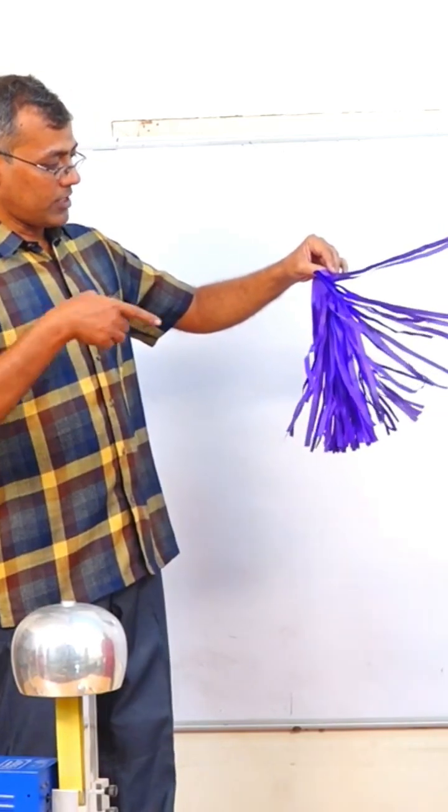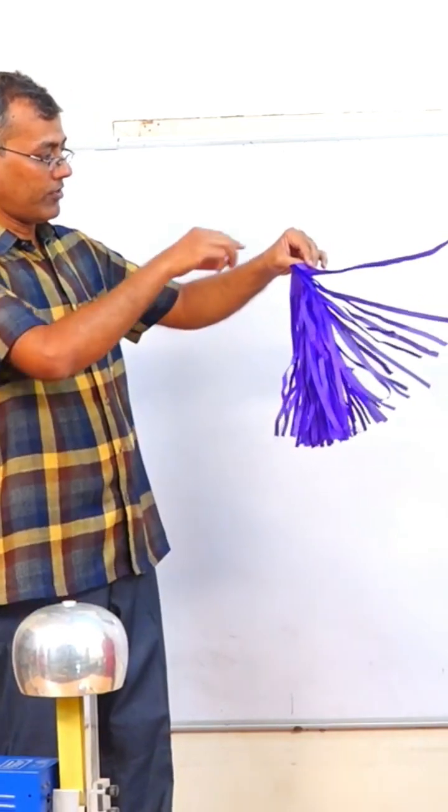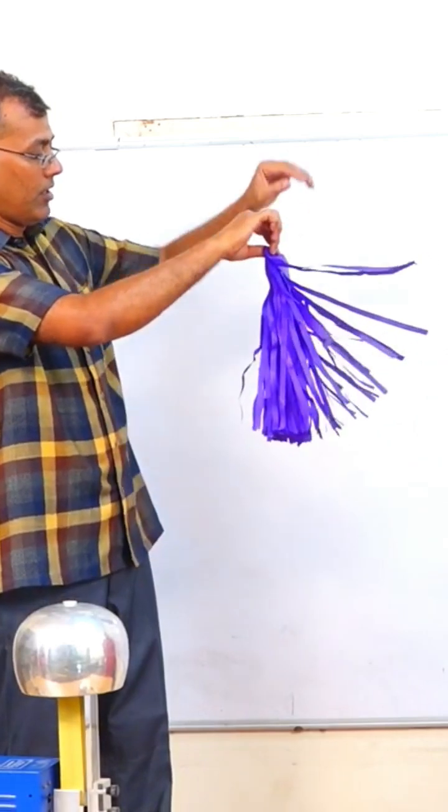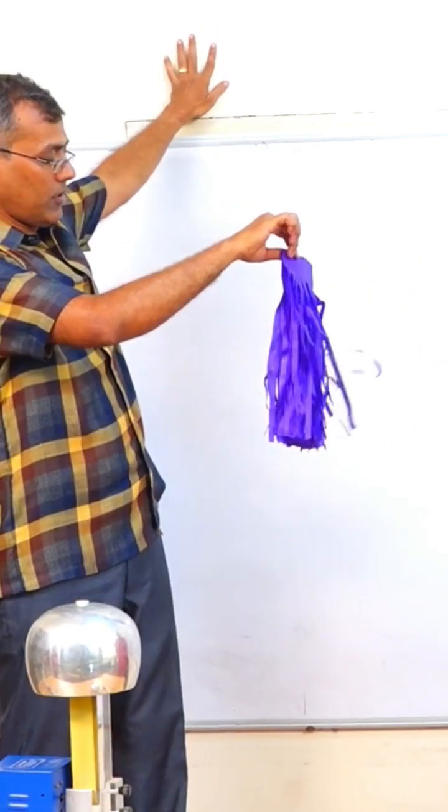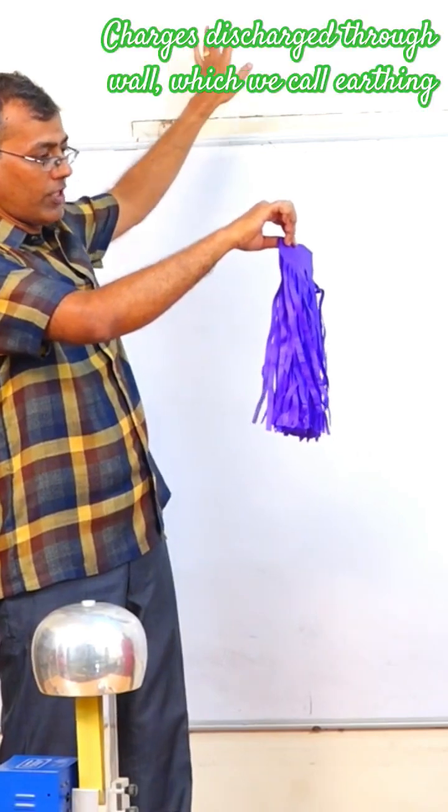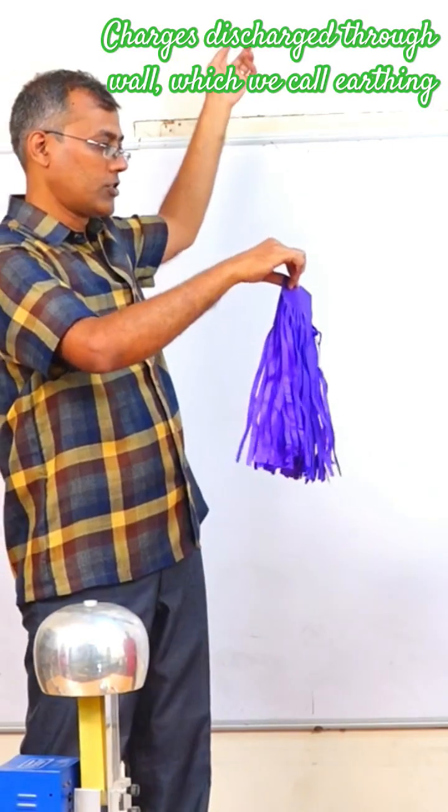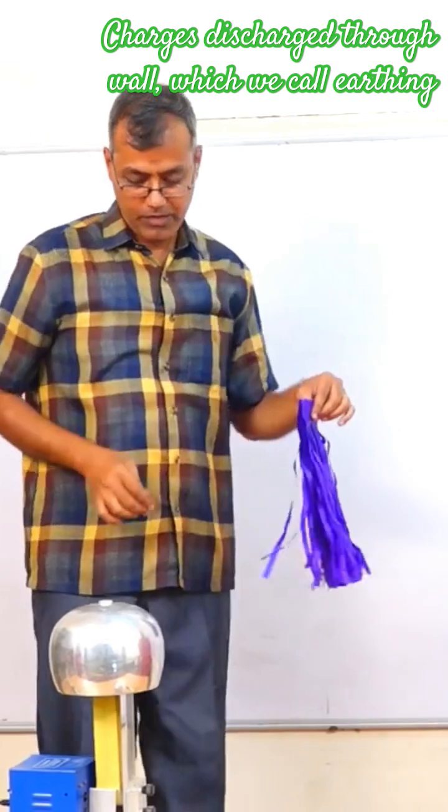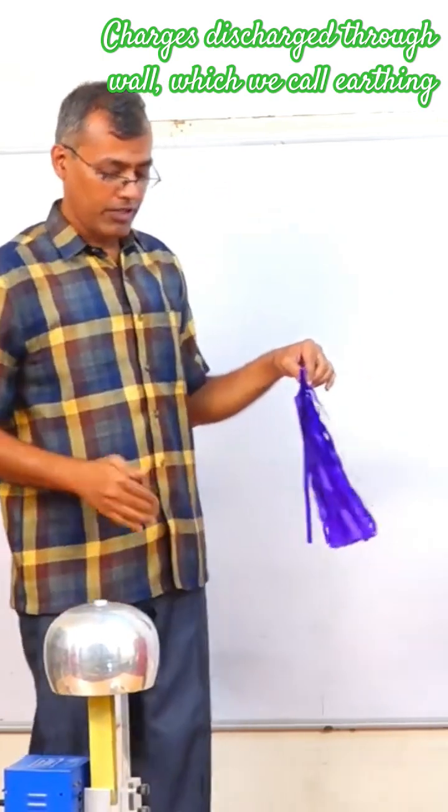Now if I remove my hands, the charges are still holding up, it's repelling each other. Suppose if I touch the wall, you can see it's falling down. That means all the charges are discharged through the wall to the earth. This is what we call earthing.